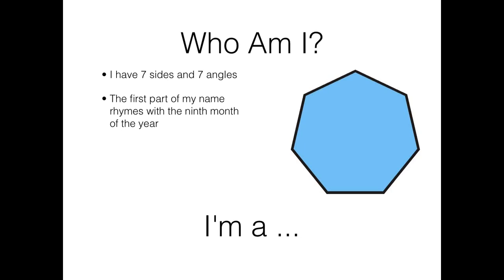Who am I? Who am I? I have seven sides. One, two, three, four, five, six, seven. And I have seven angles. One, two, three, four, five, six, seven. Now, the first part of my name rhymes with the ninth month of the year. I'm a Heptagon.